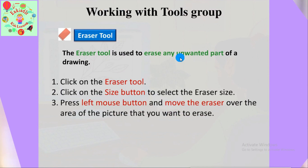The second tool is the eraser tool — it looks like a real eraser. Normally when we draw, we make some mistakes, and we use the eraser to fix them. Similarly, in MS Paint, when you draw and make mistakes, you use the eraser tool to erase those mistakes.